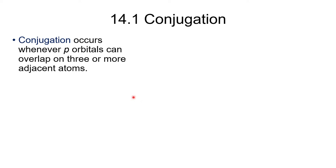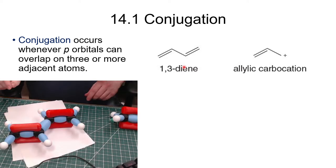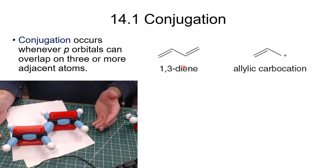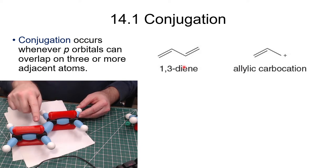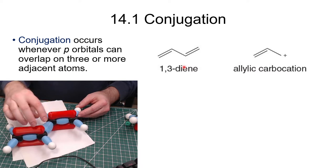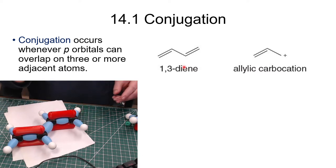We're going to start with: what is conjugation? Conjugation occurs any time you can have p orbitals that overlap on three or more adjacent atoms. As an example, we have 1,3-diene — butadiene — and an allylic carbocation. In the 1,3-butadiene molecular model, we have a pi bond between carbons 1 and 2, and a pi bond between carbons 3 and 4. Since they are directly adjacent, we get overlap of these pi systems, resulting in some pi bond character between carbon 2 and carbon 3.